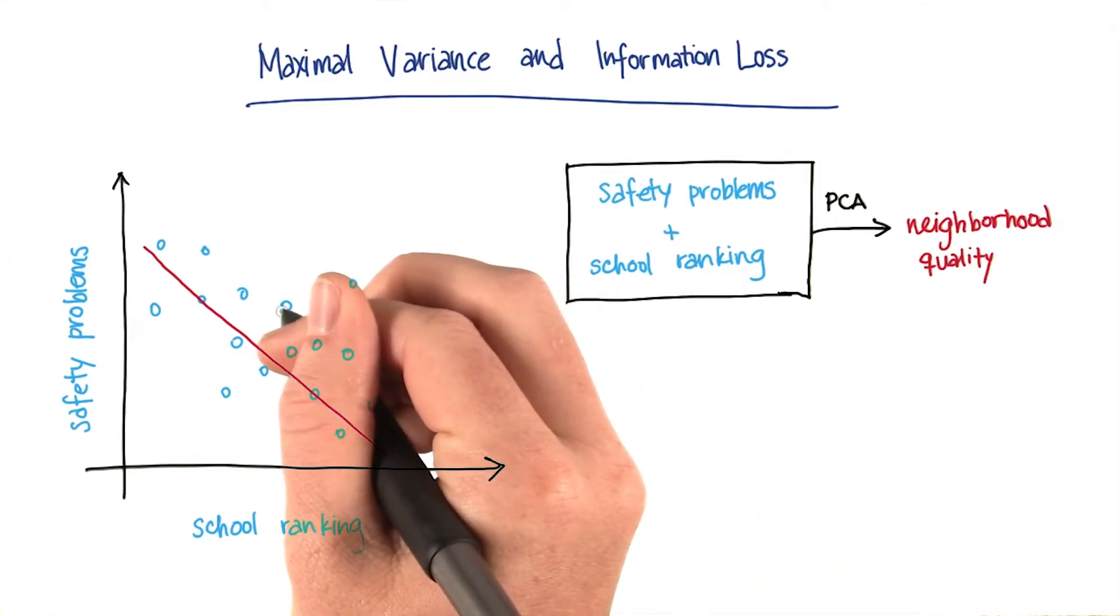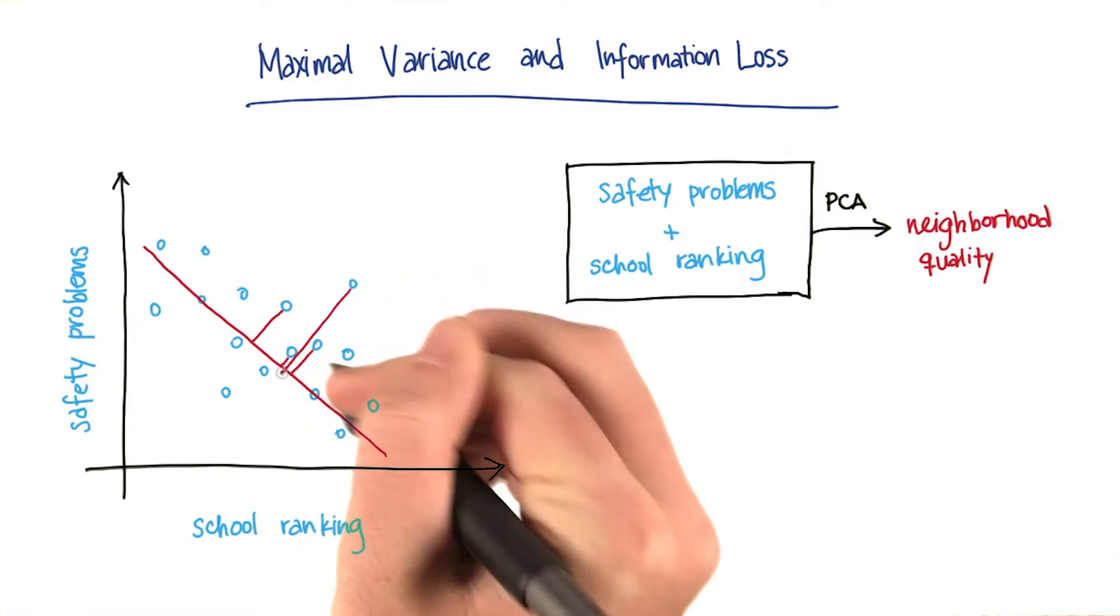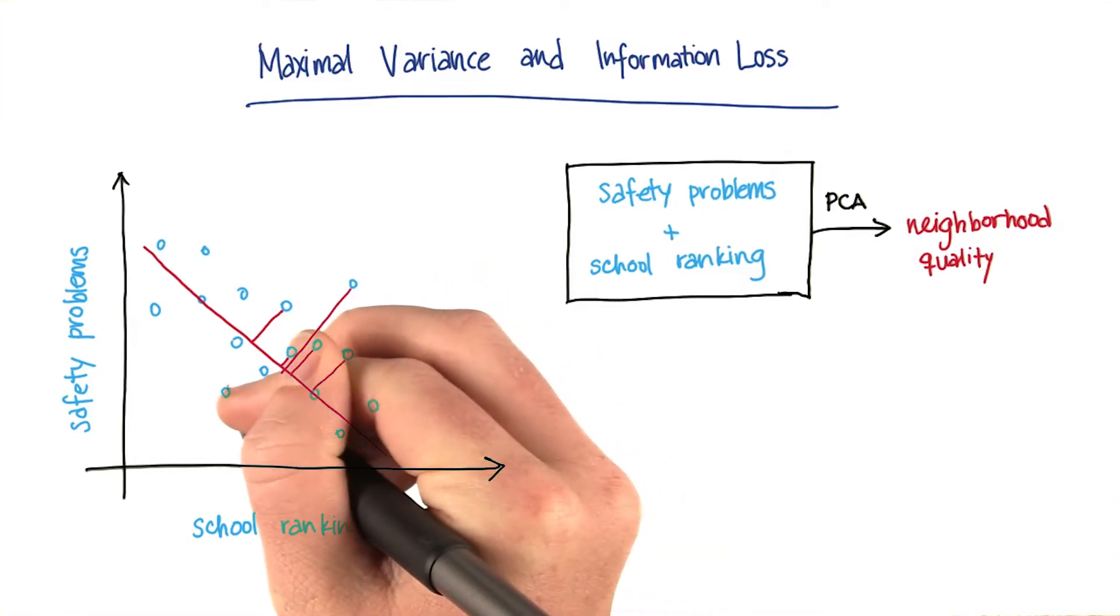So if this red line is our principal component, then the information loss is going to be something like the sum of all of these distances that I'm drawing in here.